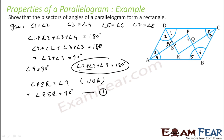Similarly, we can prove that angle PQR is also 90 degrees. Starting from the other side, angle 5 plus 6 plus 7 plus 8 is 180 degrees, which means angle 6 plus angle 7 is 90 degrees. Therefore angle 10 is also 90 degrees, so angle PQR is 90 degrees.